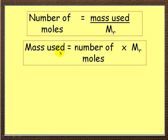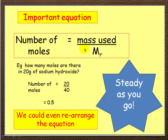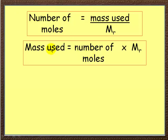Here's two rearrangements. So go back, number of moles is mass used over formula mass. Okay, there we go. Mass used is number of moles times the relative formula mass. Mass used is number of moles times relative formula mass.